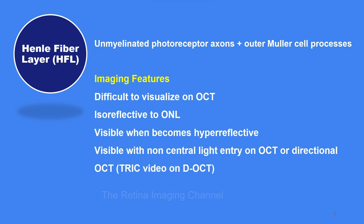This is because it is isoreflective to the outer nuclear layer, or ONL. In other words, both the Henle fiber layer (HFL) and outer nuclear layer are seen as a dark band on OCT. However, HFL may become visible when it turns hyperreflective — due to any injury like ischemia, or due to its directional property, which is utilized in directional OCT.